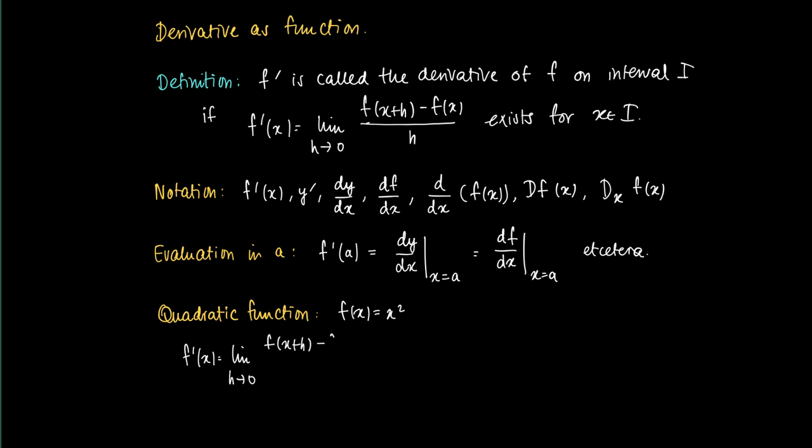We try to calculate the derivative at x, so we have to calculate the limit for h to 0 of f(x+h) minus f(x) divided by h, which is the limit of h to 0 of (x+h) squared minus x squared divided by h.